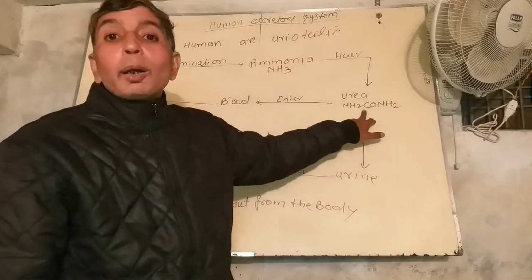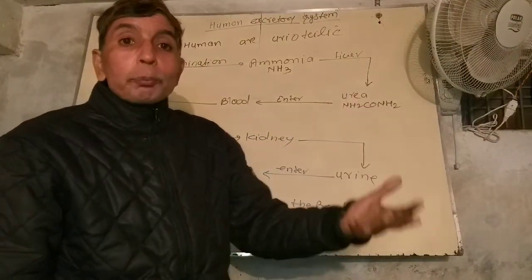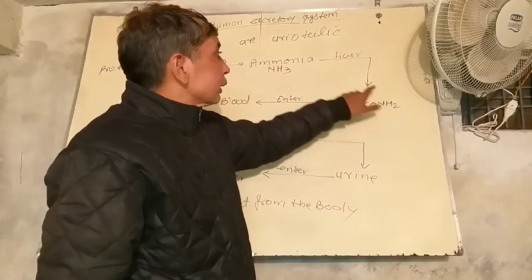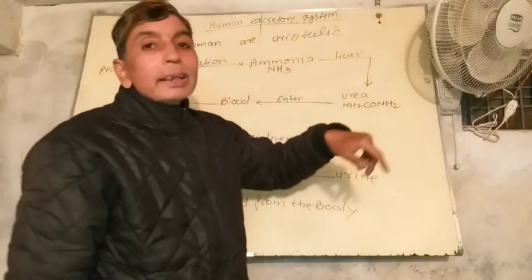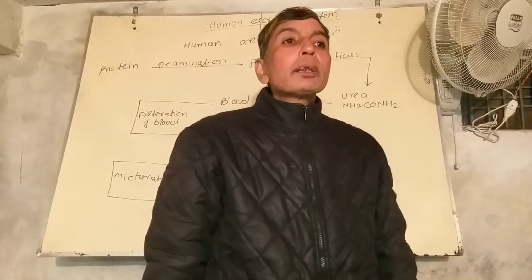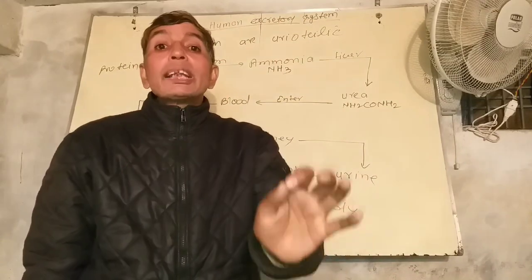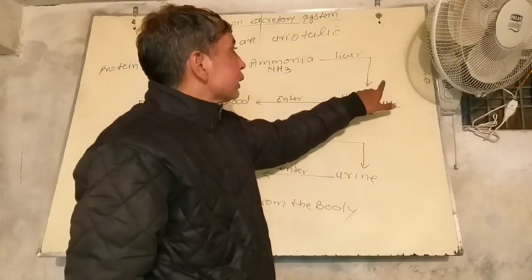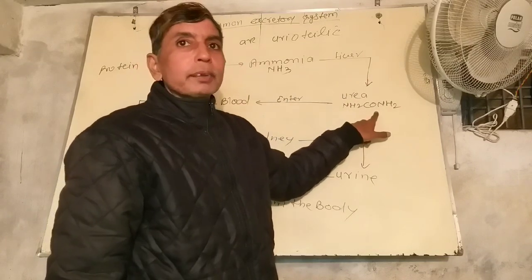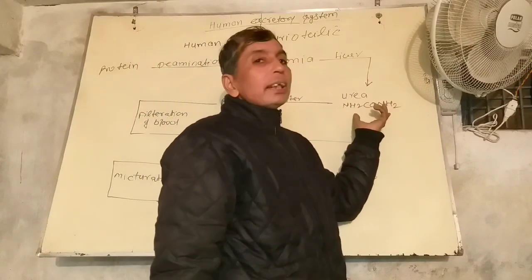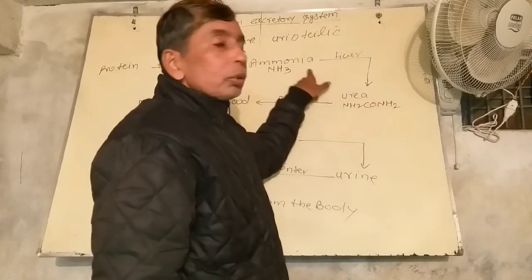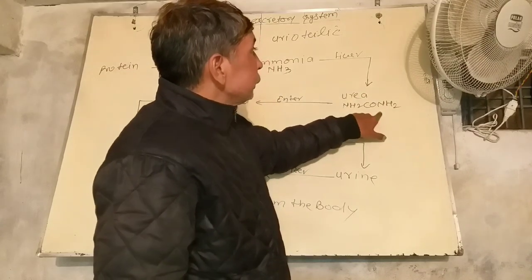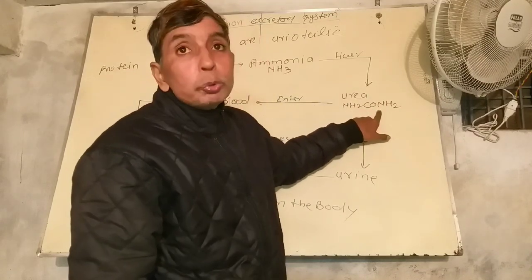Urea is the first organic compound which was made in a laboratory. Ammonia is converted into urea by a human organ — that is the liver. The liver has a cycle called the ornithine cycle, present within the liver, by which ammonia is converted into urea. Urea is less toxic than ammonia.